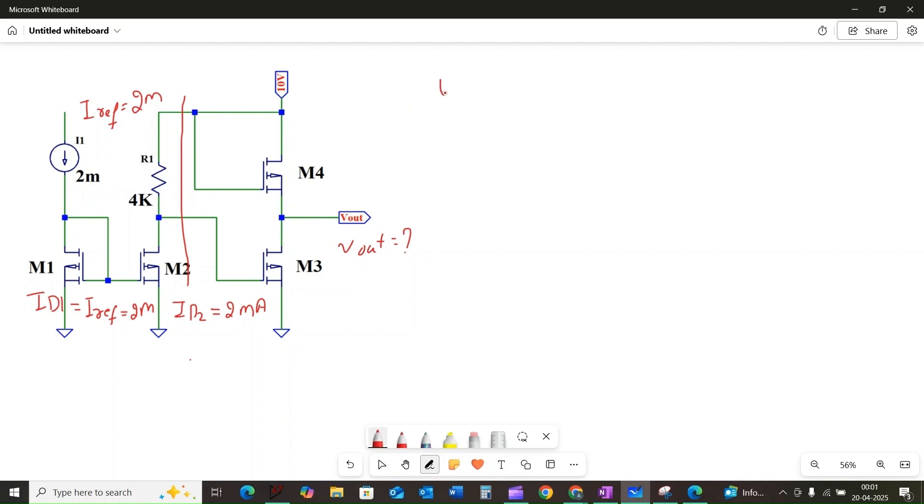Using Ohm's law, the voltage drop across the resistor R1, we can call it V, is equal to IR, which is equal to ID2 into R1. So we can calculate it as 2 milliamps into 4 kilo-ohms. When we simplify this, we will get 8 volts.